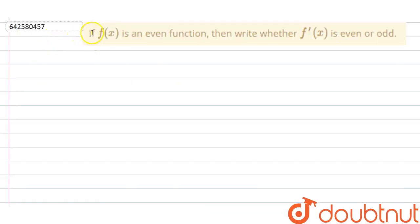Hello everyone, so our question is: if f is an even function, then write whether f'(x) is even or odd. We are given that f is an even function, so what we can say is that f(-x) is equal to f(x).